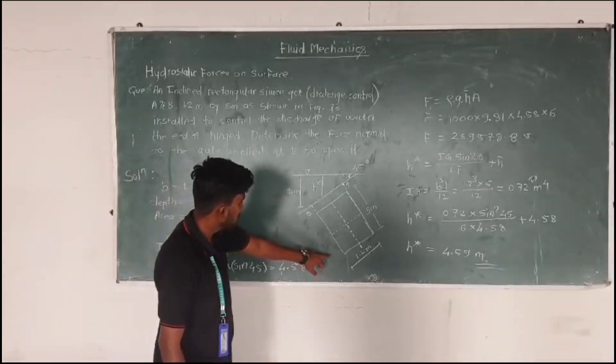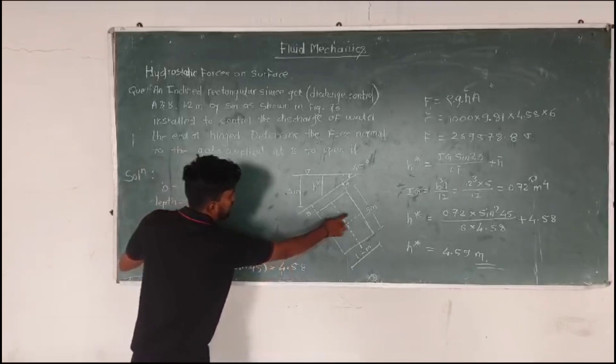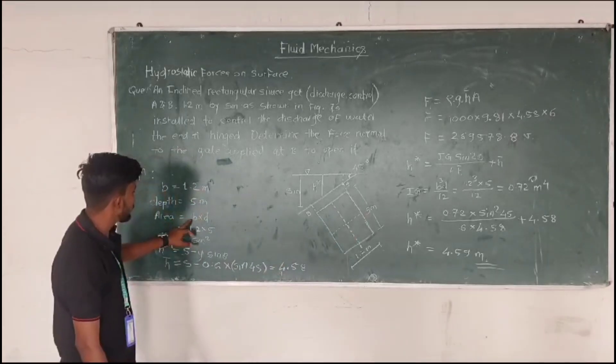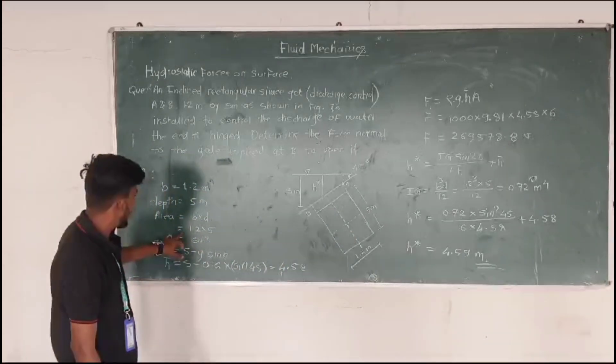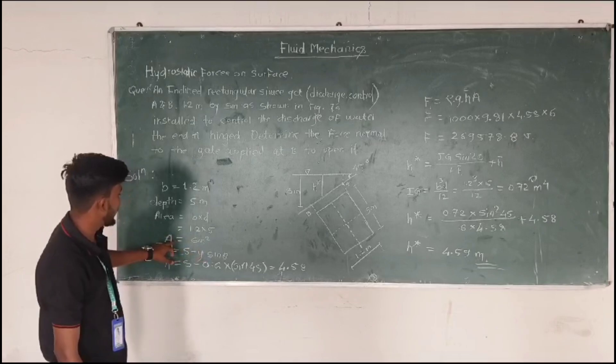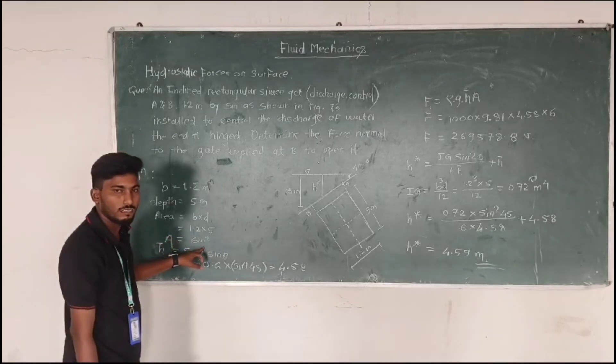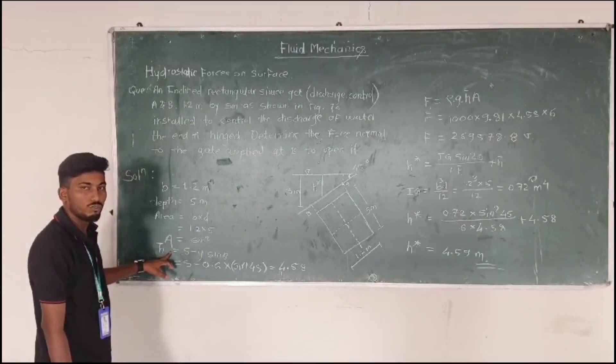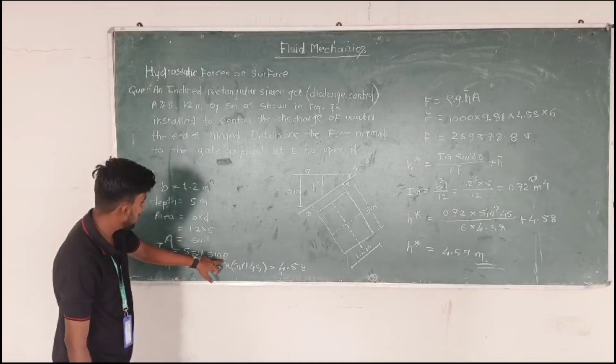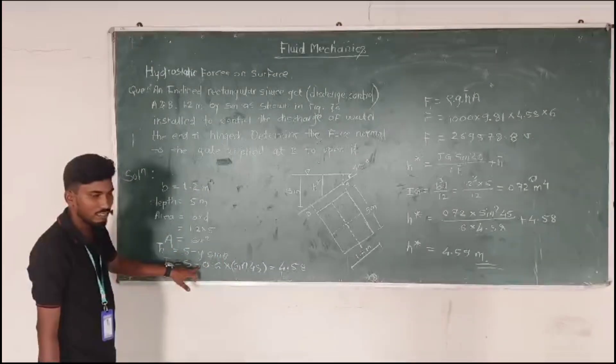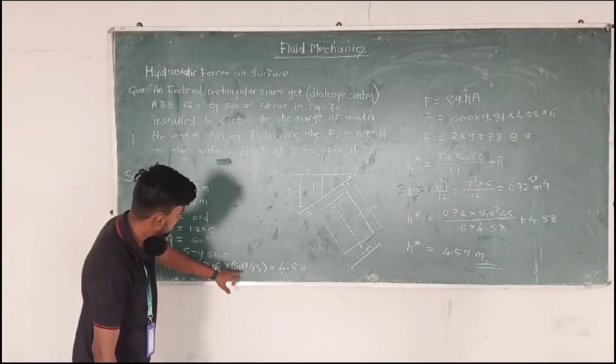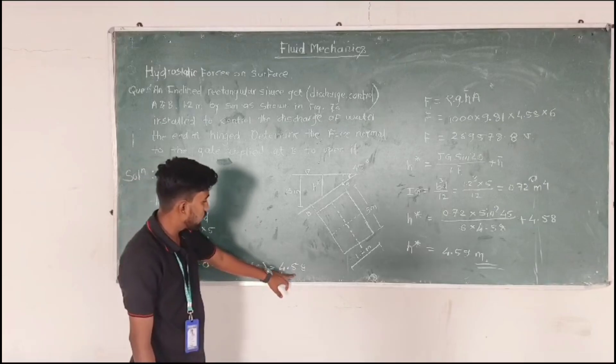B is equal to 1.2 meter and L is equal to 5 meter. The area is equal to B into L, 1.2 into 5, so area is equal to 6. And L equals to 5 minus 5 side meter, and L equals to 5 minus 0.6 into side 45 is equal to 4.5 meter.